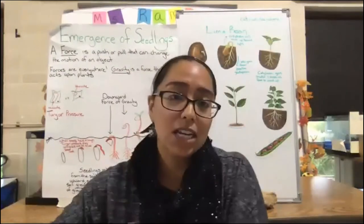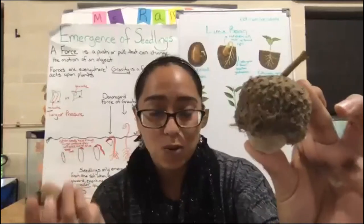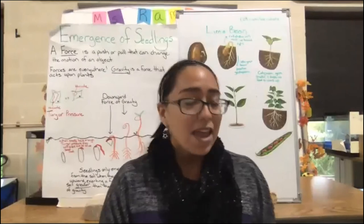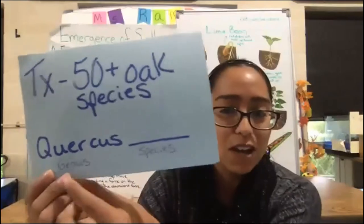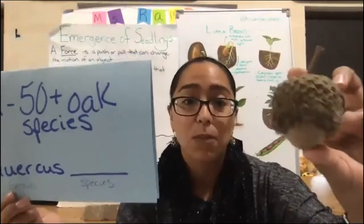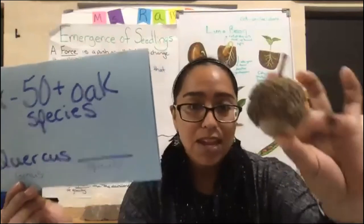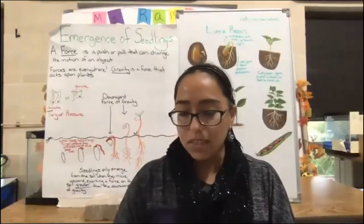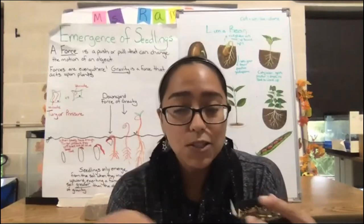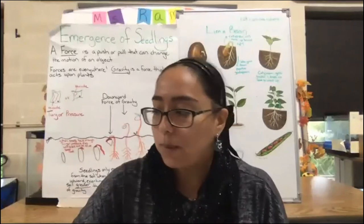A common seed that students find here at the Environmental Center are acorns. Here we have a bur oak acorn — one of the largest acorns we have here. Texas actually has over 50 species of oak trees. The genus of oak is Quercus, and this bur oak's scientific name is Quercus macrocarpa. If you plant a good healthy acorn, it can actually germinate. When squirrels bury acorns during fall for their winter stash, those that don't get eaten will eventually germinate under the right conditions.